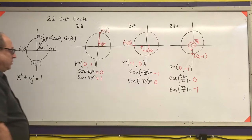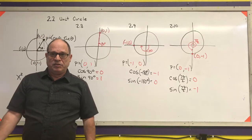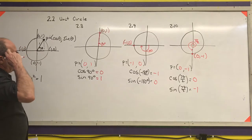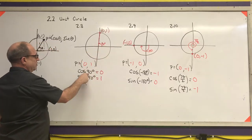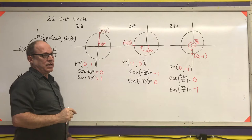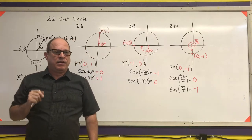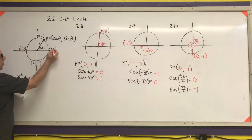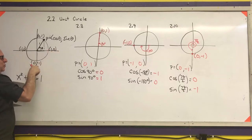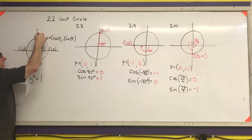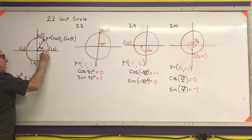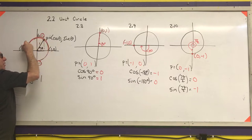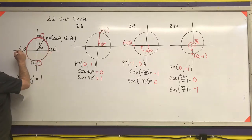These are trig functions, so they have input values and output values. I can put any number into the sine and cosine functions. But notice: whatever number I put into the sine function, the smallest value I get is -1 and the biggest is 1. No matter where I am on that circle, my outputs for the sine function must fall between -1 and 1. The same is true for cosine.